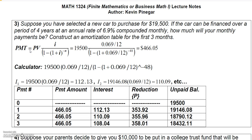We know this is an annuity because we're making monthly payments, and we know it's a present value annuity because the payments are designed to actually decrease this balance. Therefore we're dealing with the present value formula, but we're not looking for the present value — we're actually given the present value, which is the value of the vehicle: nineteen thousand five hundred dollars.